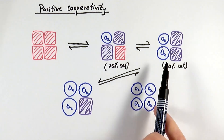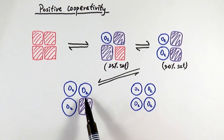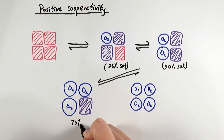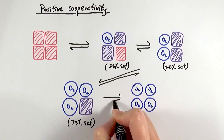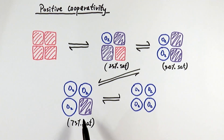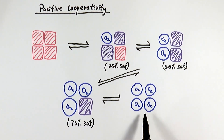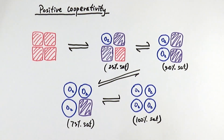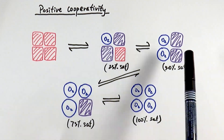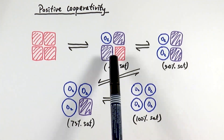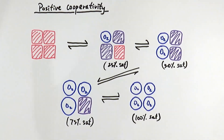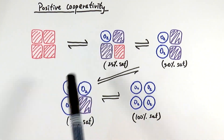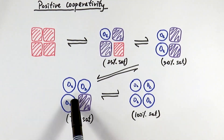Because of the increased affinity, the third oxygen binds even quicker and more easily, reaching 75% saturation. Finally, because the structure is already changed for easier binding, the fourth oxygen binds and we reach 100% saturation. At each stage the subunit structures change gradually, and each successive oxygen molecule binds more easily than the one before — the second faster than the first, the third faster than the second, and the fourth even faster than the third.